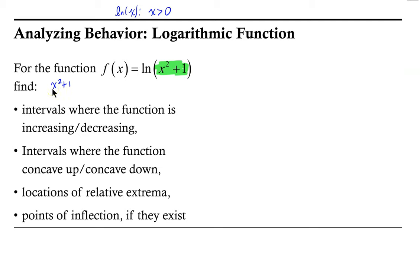If x is positive, squaring it and adding 1 will certainly be positive. So x squared plus 1 is positive for all real numbers x. We don't have any domain restrictions for this particular function. So let's go ahead and find our first derivative.